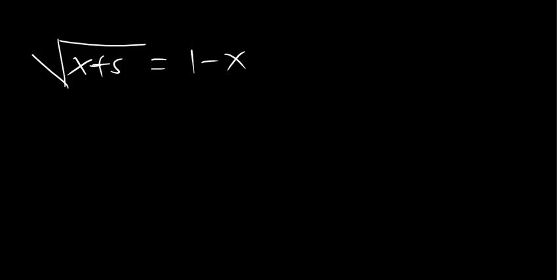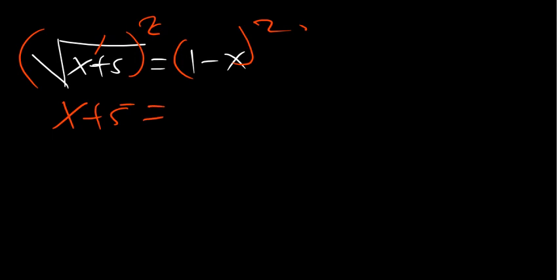The first thing we have to do is deal with the square root on this side. There is nothing we can do apart from squaring both sides, so we need to square both sides. I'm squaring to remove the square root — this square and this one cancel — so we're going to remain with x plus 5 is equal to 1 minus x, all squared.